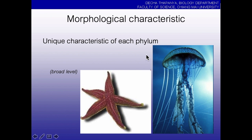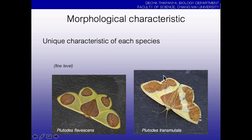Each species or each phylum contains unique characteristics. For example, two phyla — Cnidaria and Echinodermata — the name of these two phyla describes the morphology of the organisms. We can also use this at the species level.